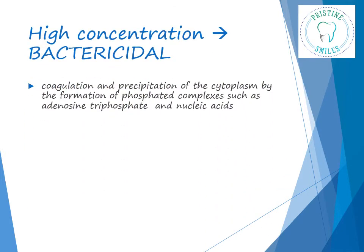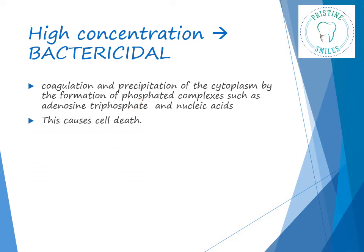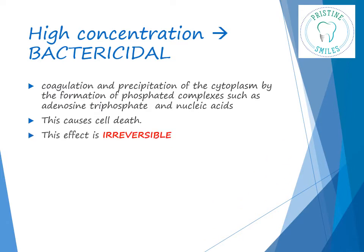At high concentration, there is coagulation and precipitation of the phosphate complexes present in the cytoplasm, such as ATP and nucleic acids. This causes cell death, and this effect is irreversible. So at high concentration, chlorhexidine becomes bactericidal.